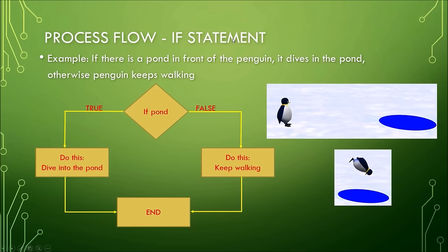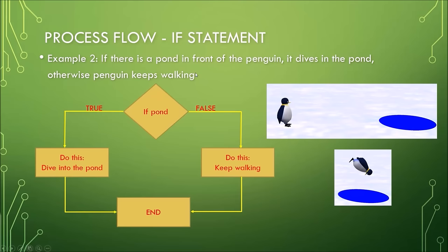Another example: if there is a pond in front of the penguin, it dives into the pond; otherwise the penguin keeps walking. The penguin walks and if there's a pond in front it dives in. In the process flow diagram, we start with the diamond shape and check the condition 'pond in front.' If true, the penguin dives into the pond and the program ends. If false, the penguin keeps walking and the program ends.